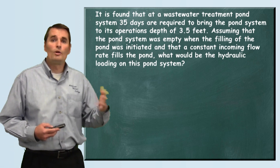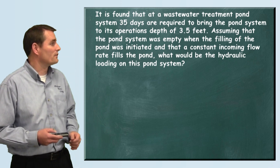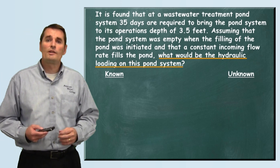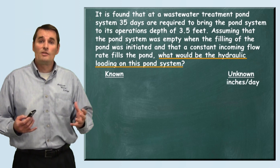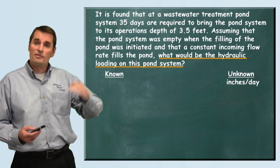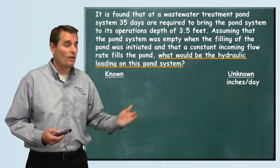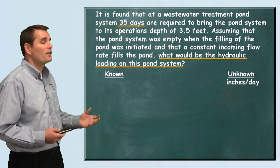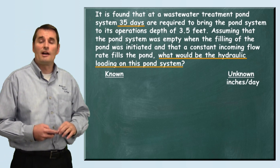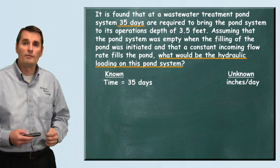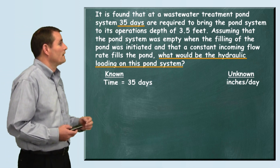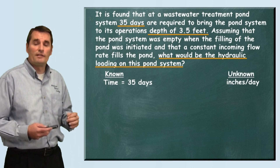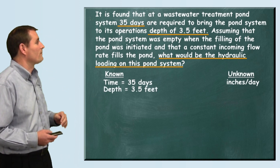Like always, we want to pull out our known and unknown information. They want us to find the hydraulic loading on this pond system. Hydraulic loading for ponds has the units of inches per day, or inches of rise per day. They tell us that it took 35 days to bring it to its operational depth, so our time is 35 days. They also tell us that it has a depth of 3.5 feet, so the operational depth is 3.5 feet.